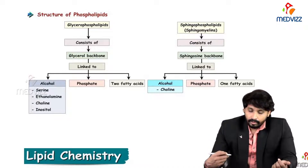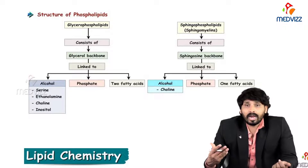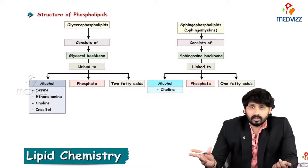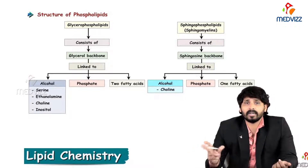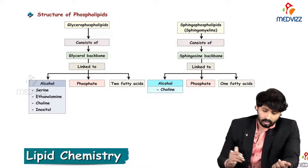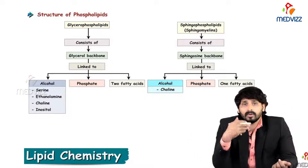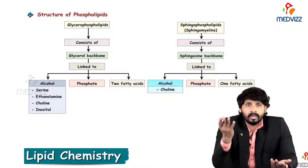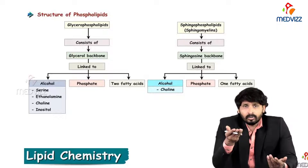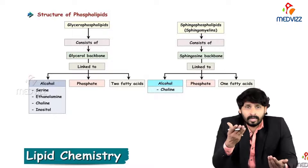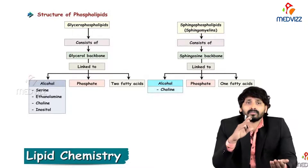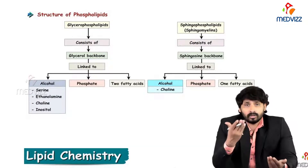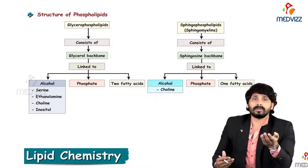Sphingophospholipids consist of sphingosine as a backbone, linked to alcohol choline, a phosphate group, and one fatty acid — which is a restriction compared to glycerophospholipids. Glycerophospholipids are named by the type of alcohol attached: if serine is attached, it is phosphatidyl serine; if ethanolamine, phosphatidyl ethanolamine; if choline, phosphatidyl choline; and if inositol, phosphatidyl inositol.